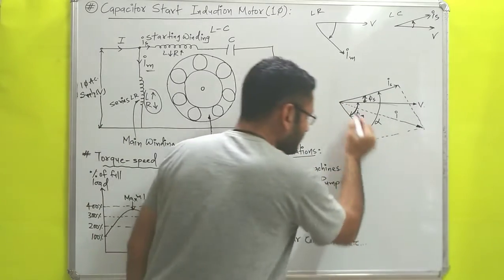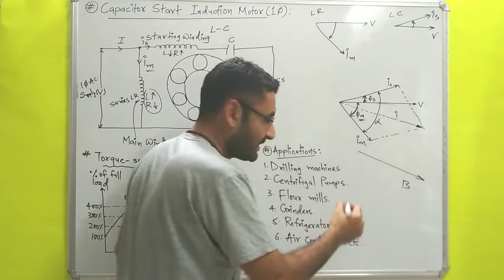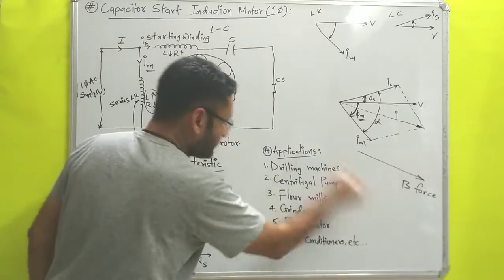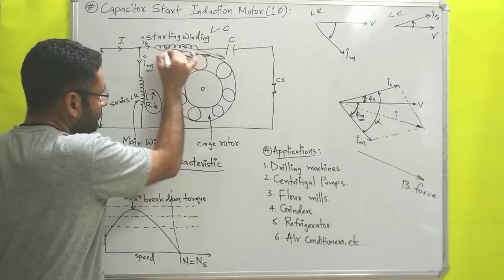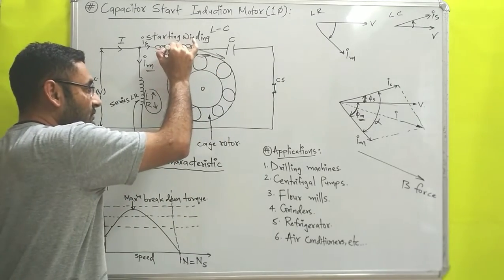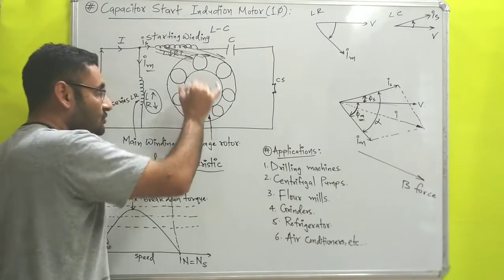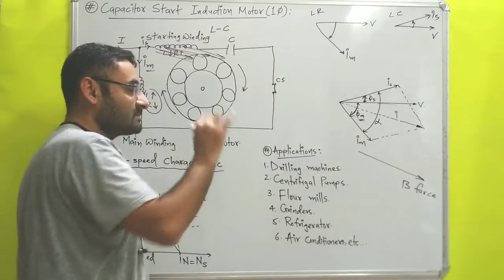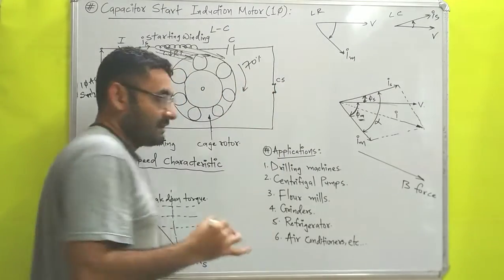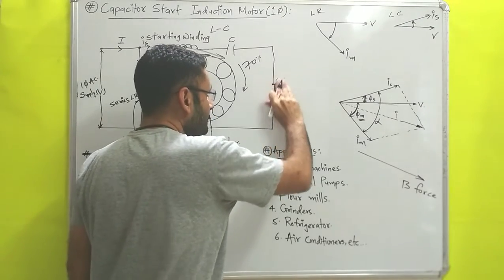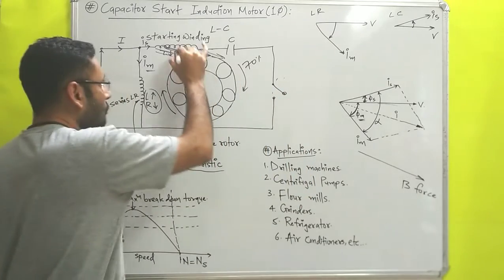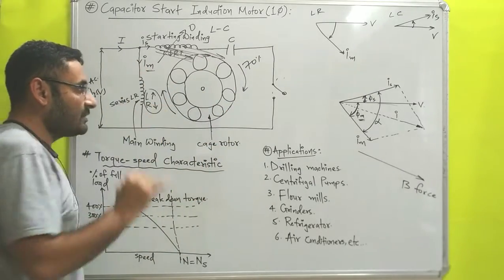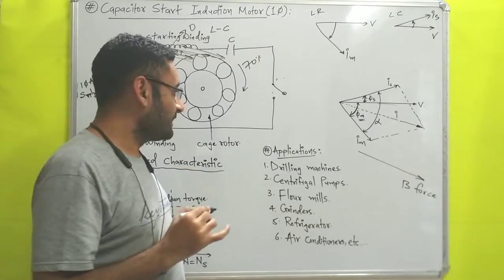Due to the resultant current, a magnetic field is produced according to Faraday's principle. That magnetic field produces a magnetic force in a specific direction, which is imparted on the rotor. Due to that force, the rotor gets an initial torque and starts to rotate. When the rotor speed reaches 70% of its normal speed, the centrifugal switch opens, so no current flows from the starting winding, and the rotor continues rotating with only the main winding.